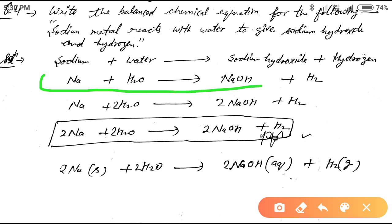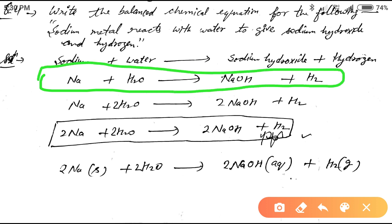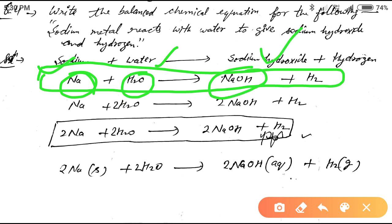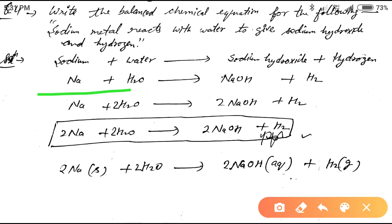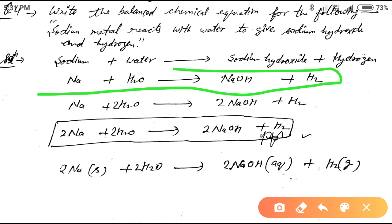The formula equation uses the atomic symbol of sodium, Na, and the formula of water is H₂O. NaOH is the formula of sodium hydroxide and H₂ is the formula of hydrogen. This gives us the chemical equation, but it is unbalanced — now we need to balance it.